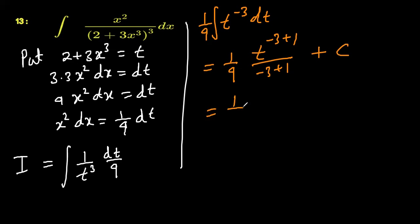It is same as 1 over 9, t to the power negative 2, divided by negative 2, plus c.